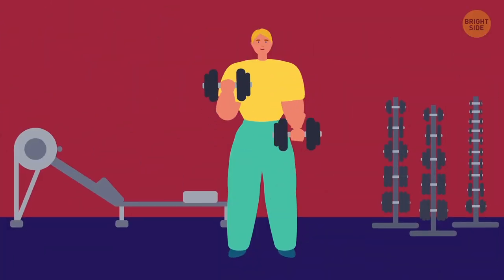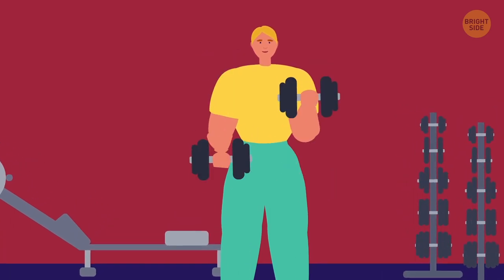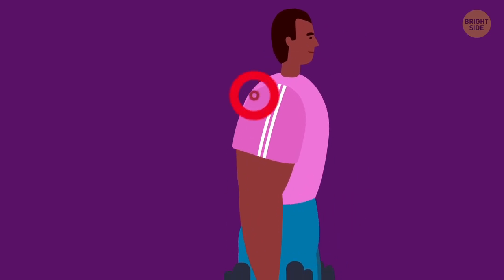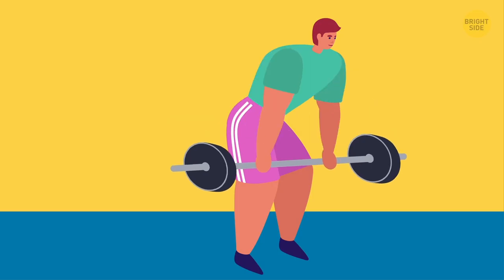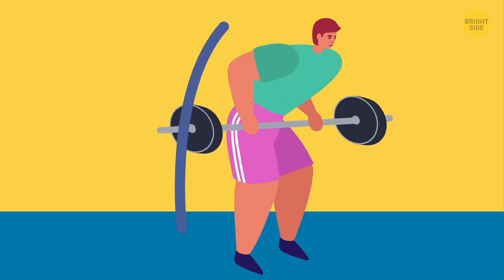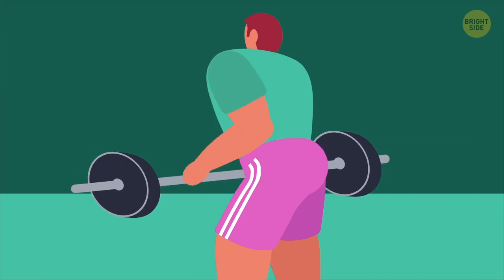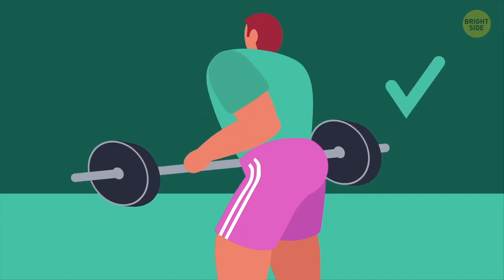Lifting weights is the very exercise you should be extremely careful with because if you do even the tiniest move incorrectly, you can have big problems with your back. For example, too many gym-goers bend their spines while doing bent-over barbell rows. During this exercise, you have to keep your back flat and your shoulders moved a bit back and down.